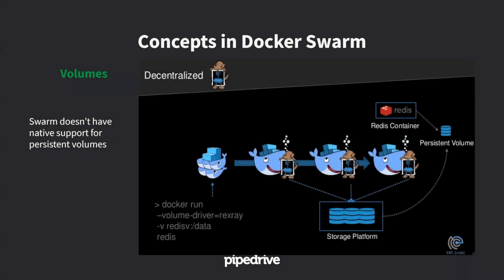Then we have volumes, which is currently the weakest point of Swarm. Swarm doesn't natively support distributed persistent volumes. If you have a volume on one dedicated node, you need to constrain the service to work on that node. There are plugins that allow attachment from AWS volumes to the Swarm so they can be accessible across the cluster, but that is a work in progress.